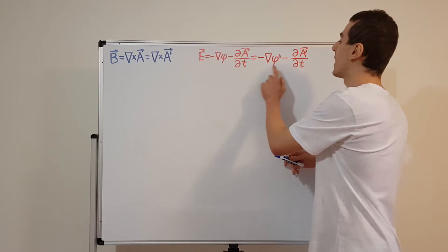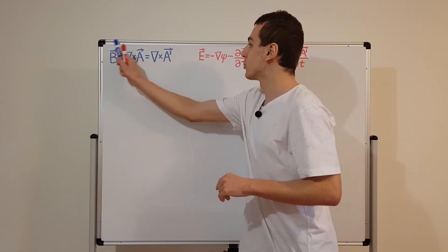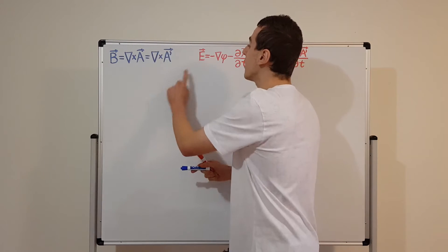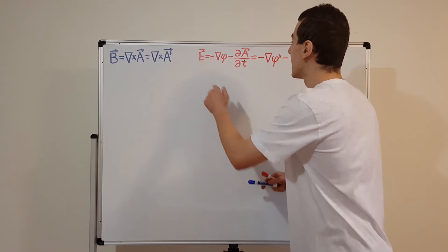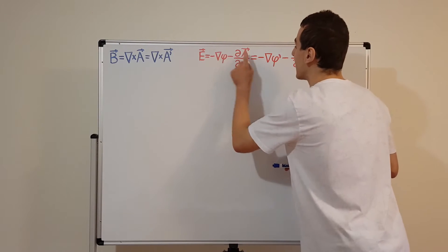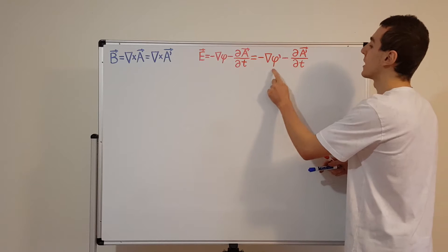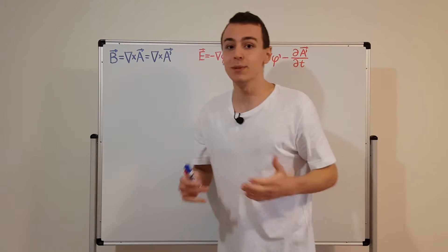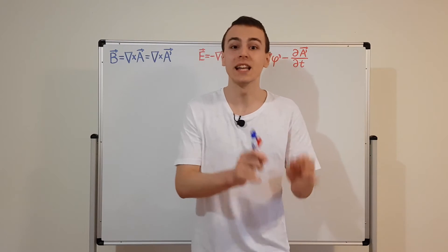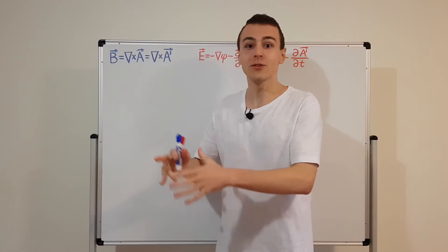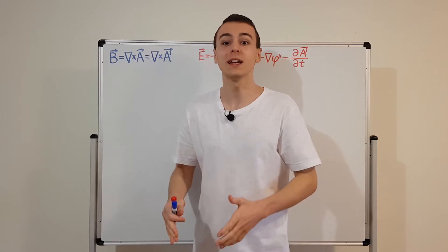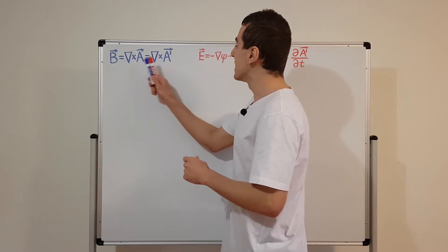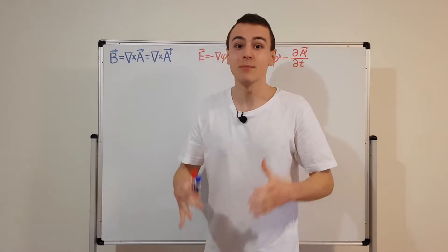Phi also gets transformed to phi prime. The magnetic field can be written as the curl of A, and also as the curl of A prime. The electric field can be written as a combination of phi and A, and also as a combination of phi prime and A prime. So let's find out what the transformation has to be to make sure that we preserve the electric and magnetic fields, because getting a different field would not represent the identical physical situation.